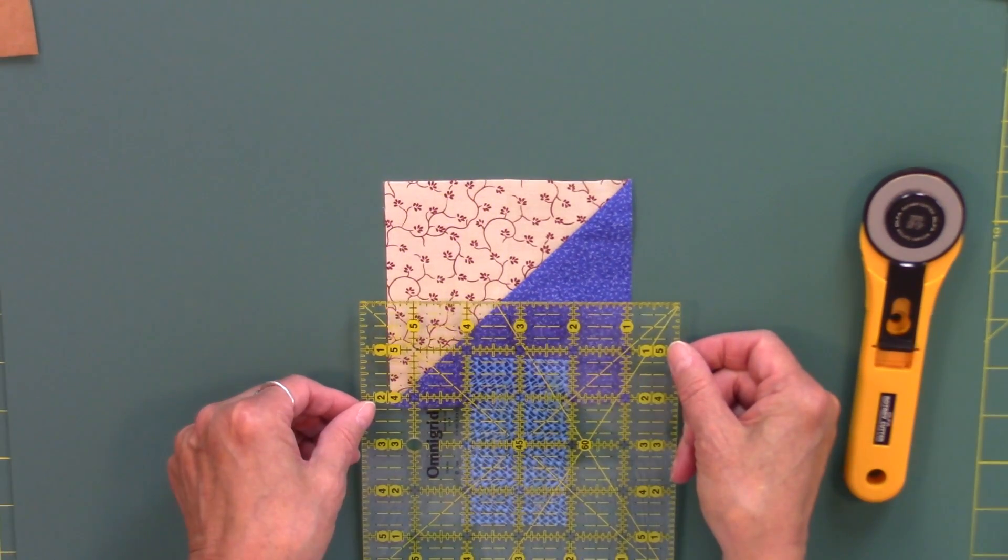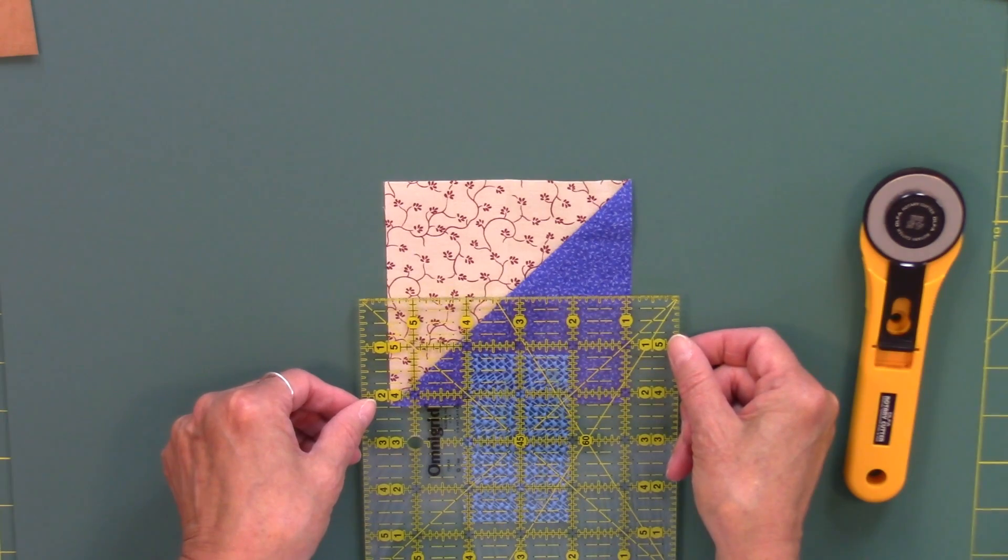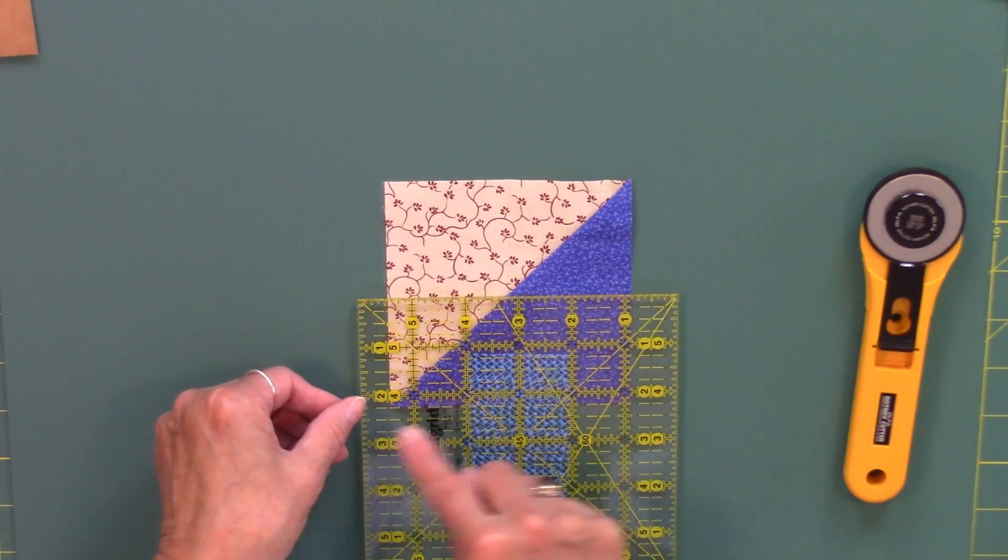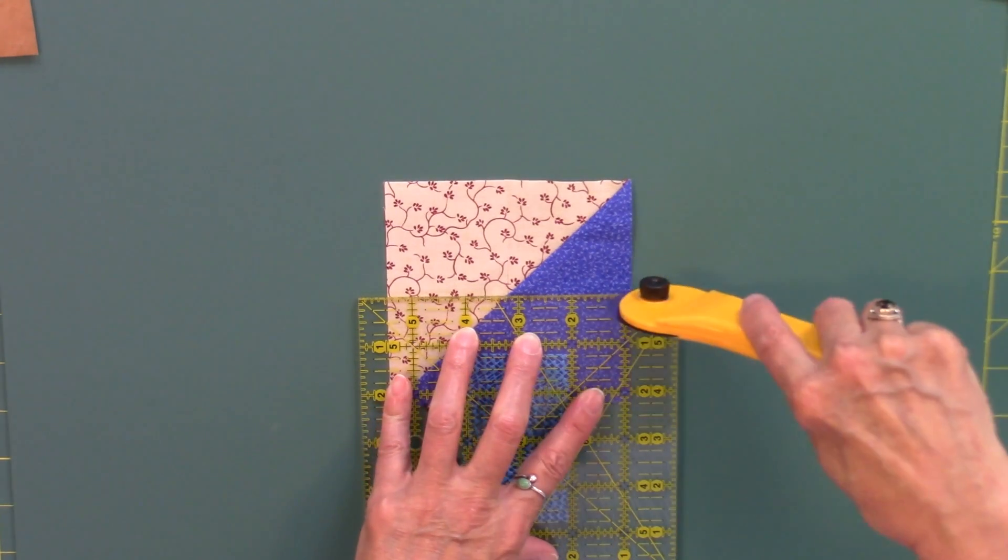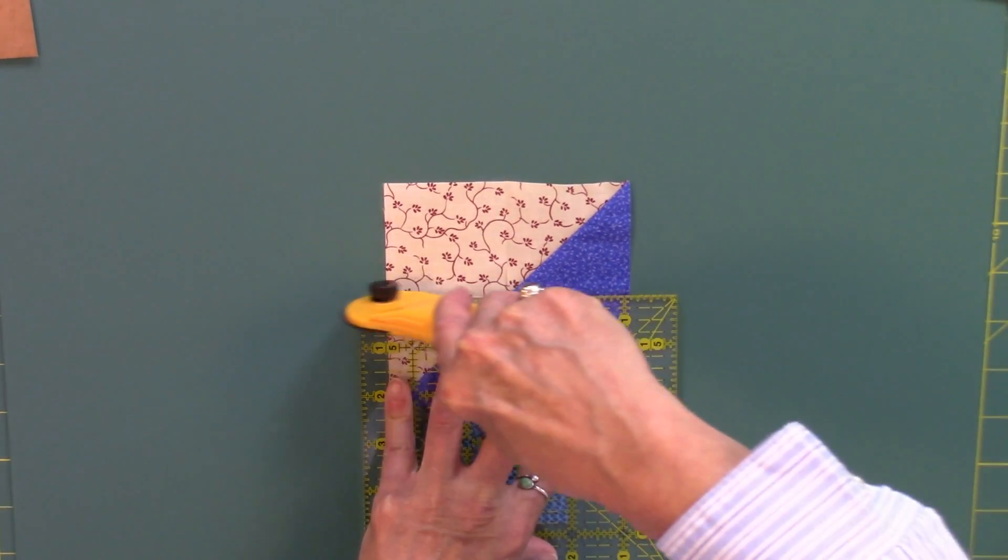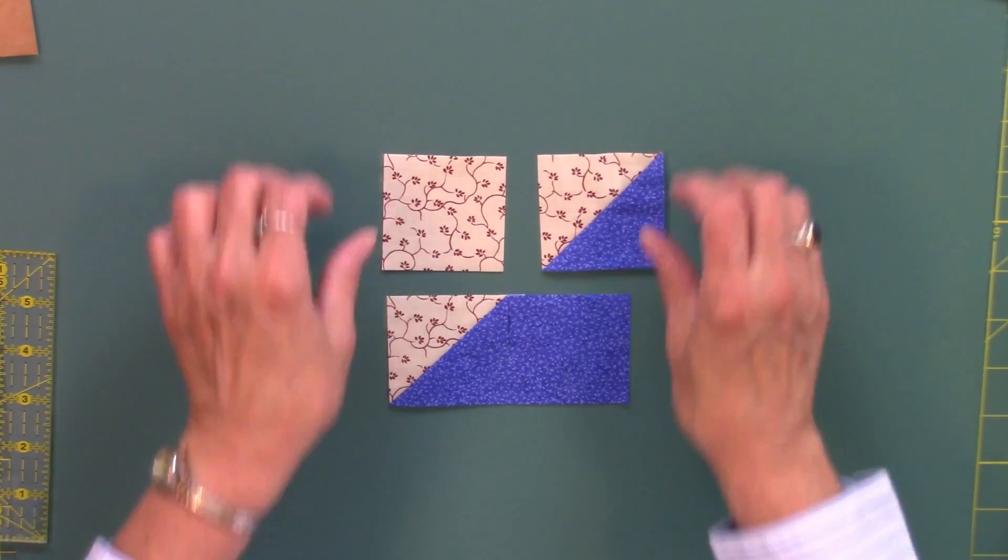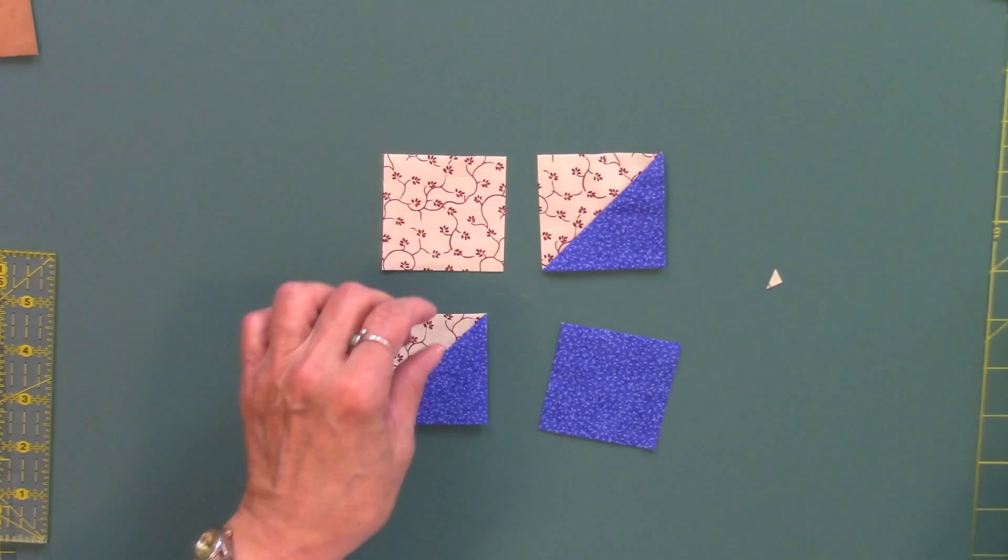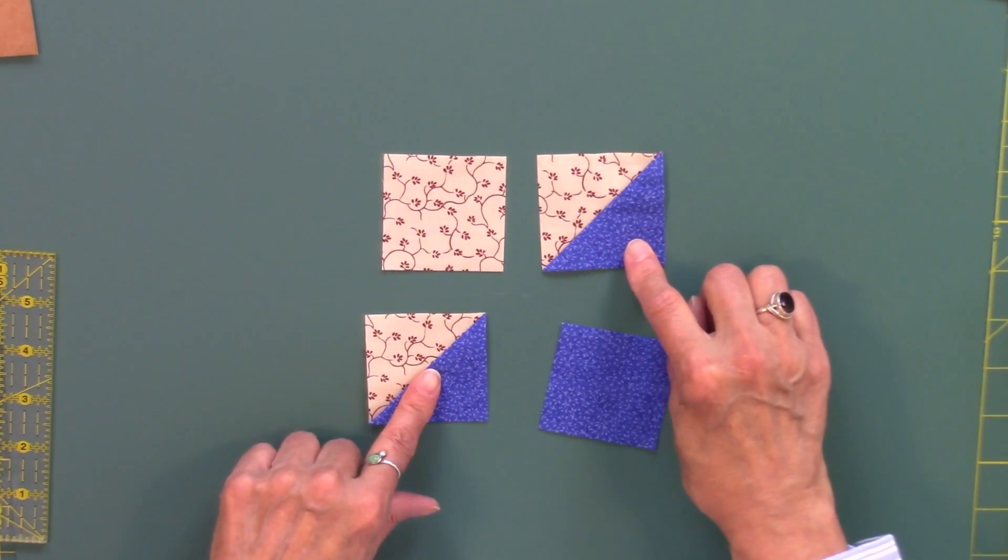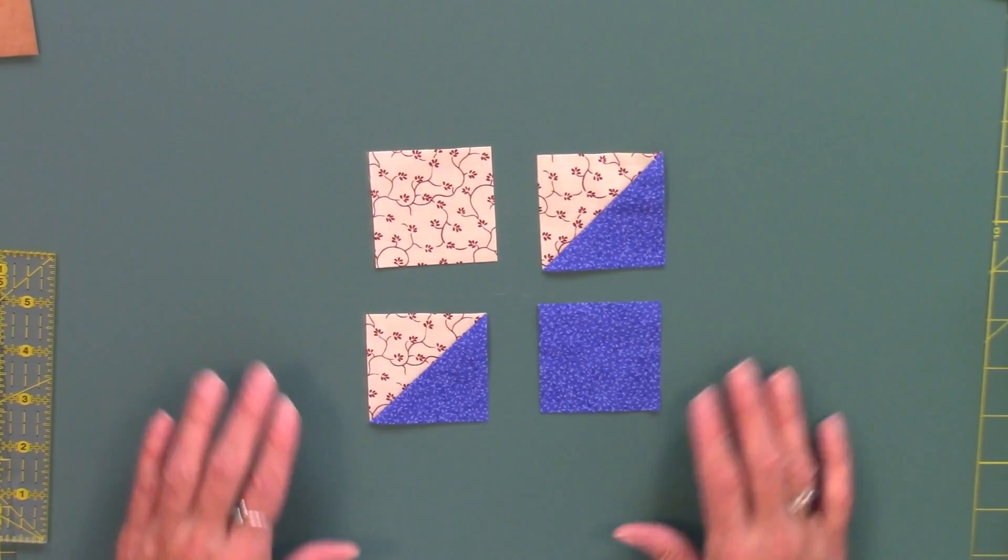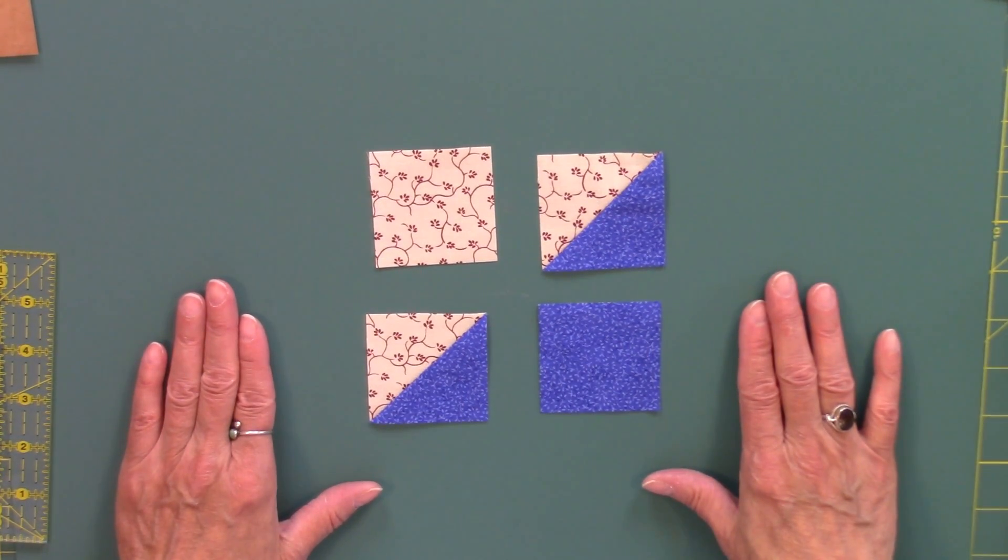And then pick up the ruler, give the ruler a turn and lay it down on the unit again, two and a quarter inch line right on the edge of the unit and cut across. This then yields four pieces, two of which are the half square triangle units and a light square and a dark square to play with and I refer to these units as small wonders.